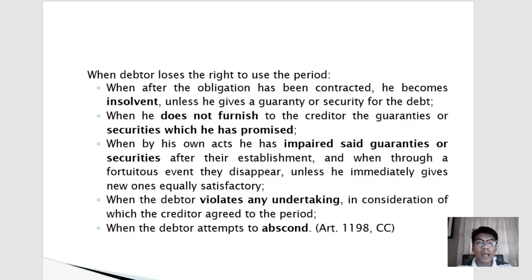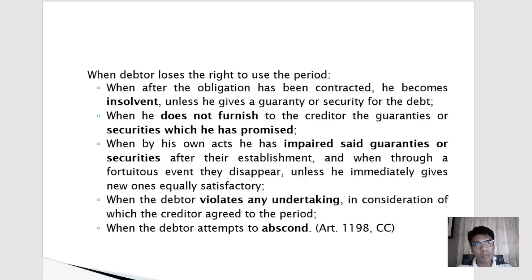There are instances when the debtor loses the right to use the period: first, when after the obligation has been contracted he becomes insolvent, unless he gives a guarantee; second, when he does not furnish the guarantees or securities promised; third, when by his own acts he has impaired said guarantees; fourth, when through a fortuitous event they disappear unless he immediately gives new ones; fifth, when he violates any undertaking in consideration of the period; and lastly, when the debtor attempts to abscond.